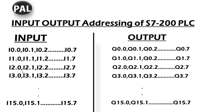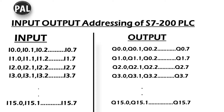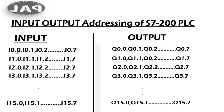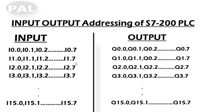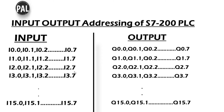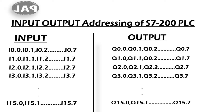Compared to my previous video on Logo PLC, the input addressing there used I0.01, I0.002 as default. But for the S7-200, the addressing is I0.0 to I0.7 in octal format. Then I1.0 to I1.7 — also octal format, depending on your PLC CPU. For all Siemens brands, input is always I and output is always Q.